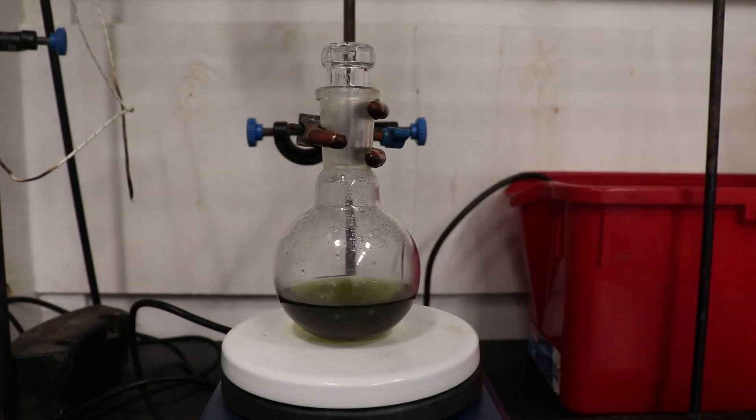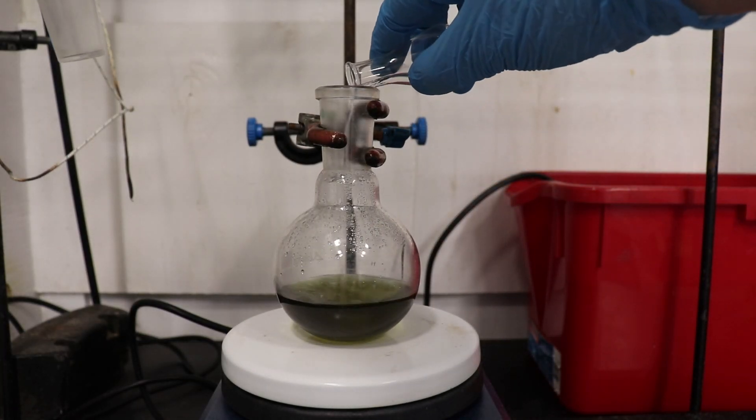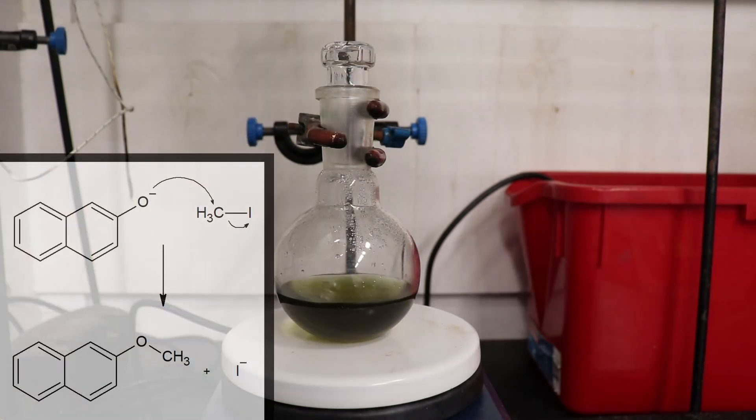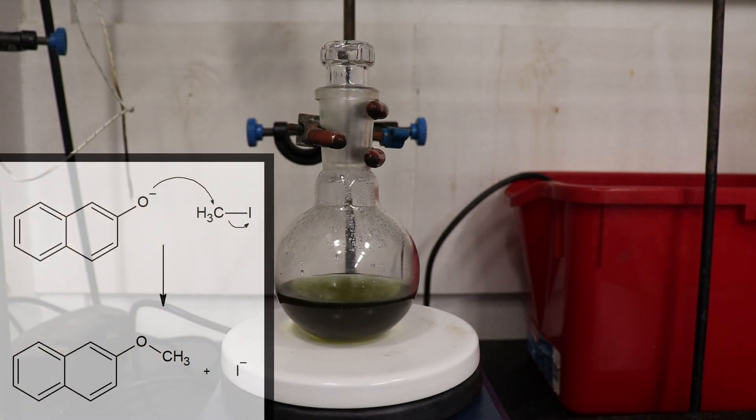Then 10 grams of methyl iodide is added into the flask. Then the flask is stoppered and allowed to stir at room temperature for 72 hours.